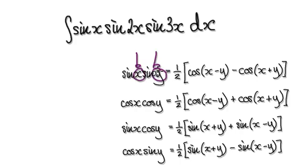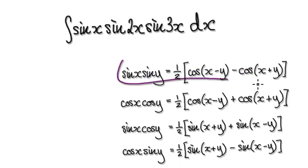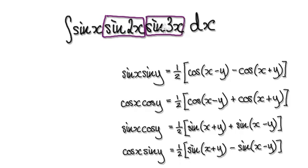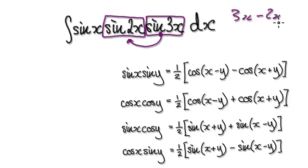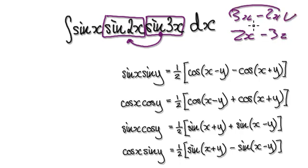So sine of one angle times sine of another angle equals a half times cosine of the first minus the second, minus cosine of the first plus the second. I'm going to switch the two sine blocks around here, because later I'd much rather have 3x take away 2x than 2x take away 3x — that's neater.